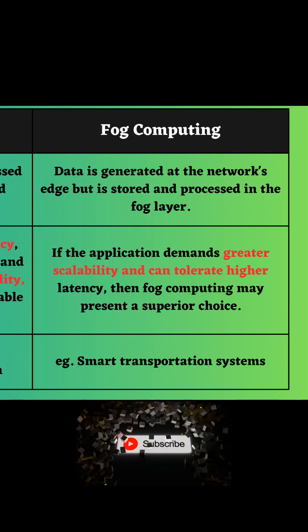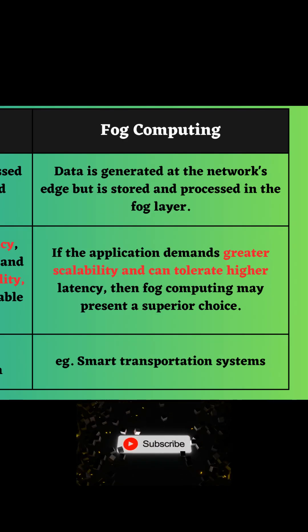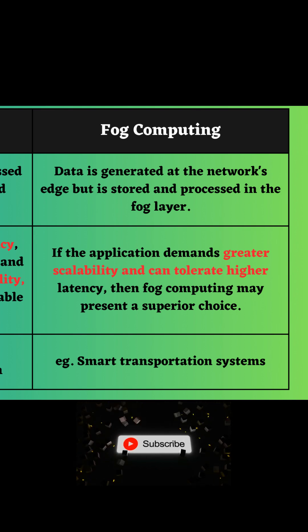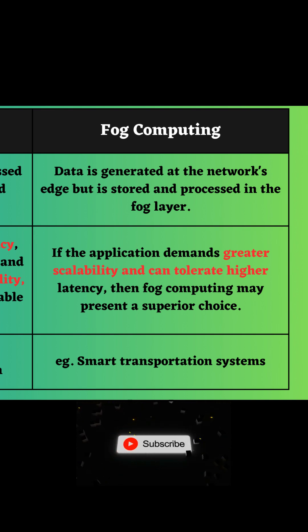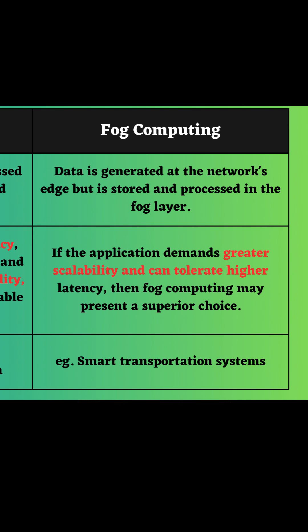Smart transportation systems are an example of fog computing, where data is collected from traffic sensors and processed by fog nodes, and this is used to optimize traffic flow and improve safety.